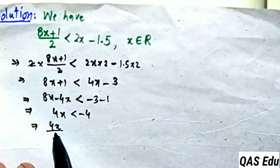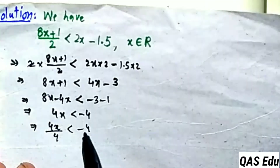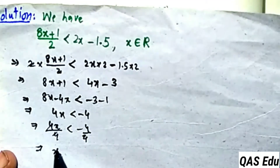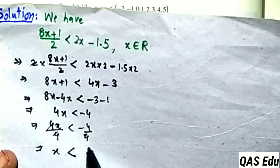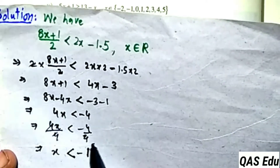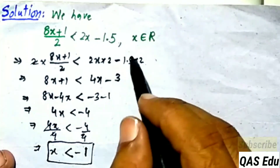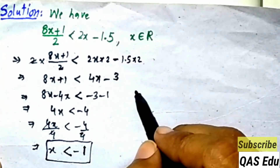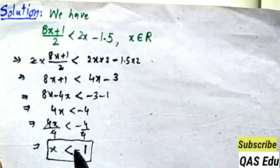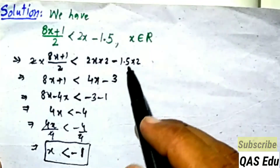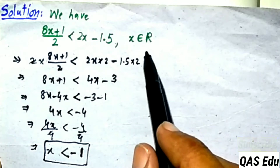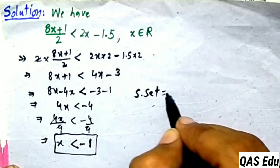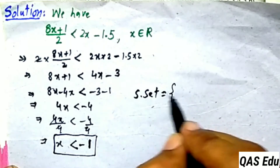Dividing both sides by 4, x is less than minus 1. Since the restriction is x belongs to real numbers, the solution set contains all real numbers less than minus 1. We write this in set-builder notation.